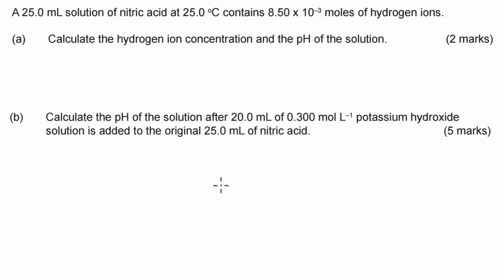So the question is saying we've got a 25 mL solution of nitric acid, so let's just make sure we know what that is. That's HNO3 at 25 degrees contains that many moles of hydrogen ions. Calculate the hydrogen ion concentration and the pH of the solution. Okay, so this part here only worth two marks, so you're not going to expect that it's going to take too long to do. So let's go for it.